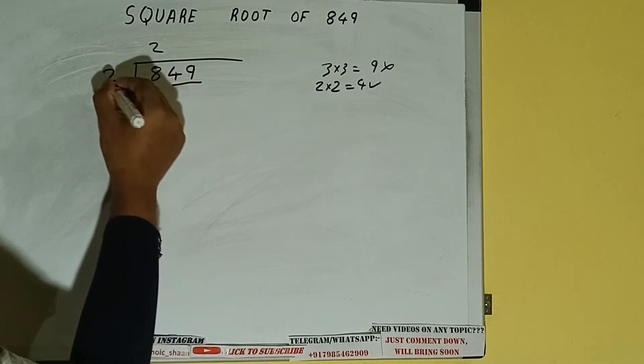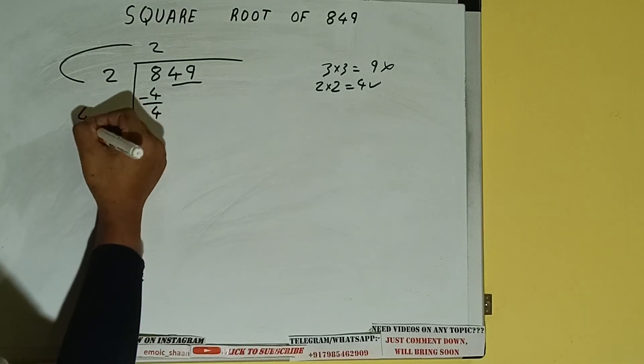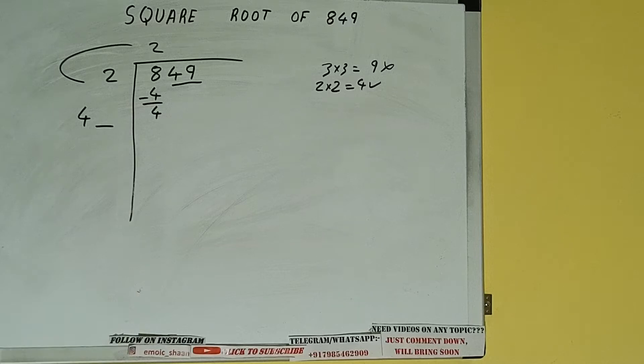Then 4 will be left. We did 2 into 2, so add both. 2 plus 2 will be 4. Write it here and keep a digit extra. And this number we need to make it big.